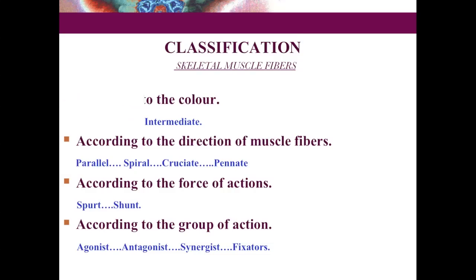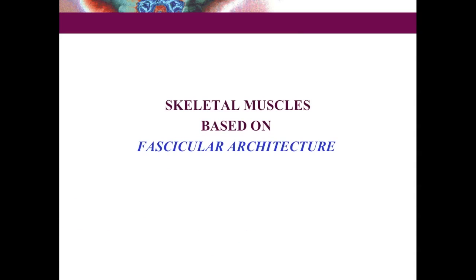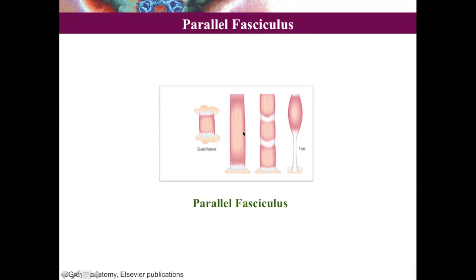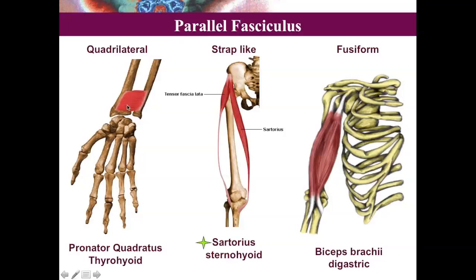Classification by direction of muscle fibers is based on fascicular architecture. A fascicle is a bundle of muscle fibers — individual muscle fibers group into a bundle called a fascicle, and many fascicles unite to form one muscle. The first type is parallel fasciculus, where bundles run parallel to each other. This can be quadrilateral in shape — example is pronator quadratus; strap-like — example is sartorius, the longest muscle in the body; or fusiform — example is biceps brachii.